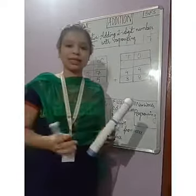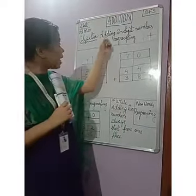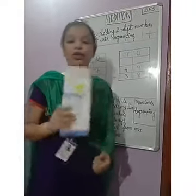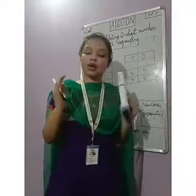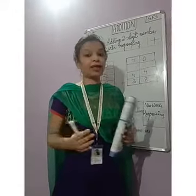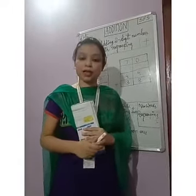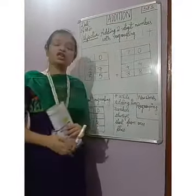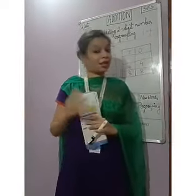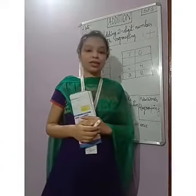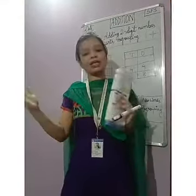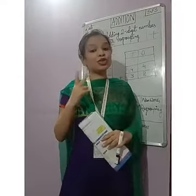Today's class is about adding two-digit numbers with regrouping. Today we are not going to add objects or items — we are going to add numbers. Two-digit numbers: all the numbers from 10 to 99 are known as two-digit numbers, and they have a place value.